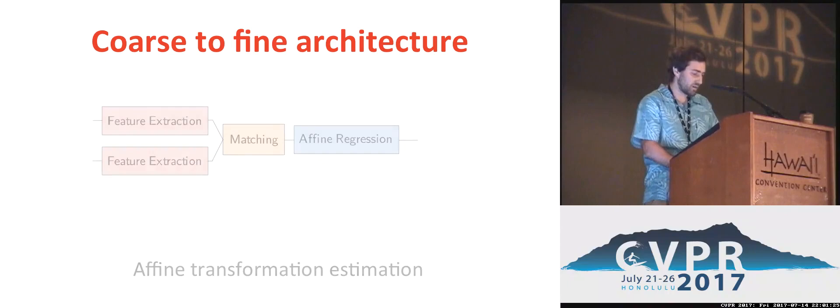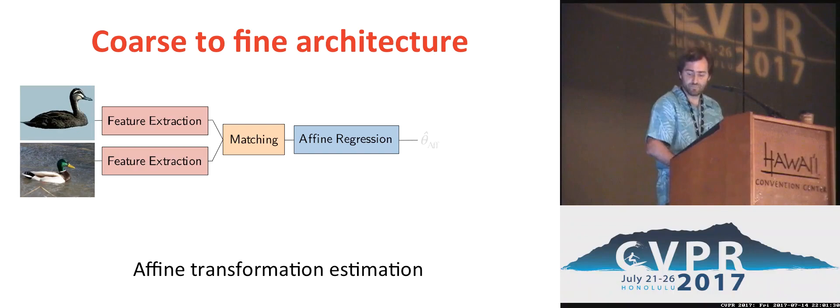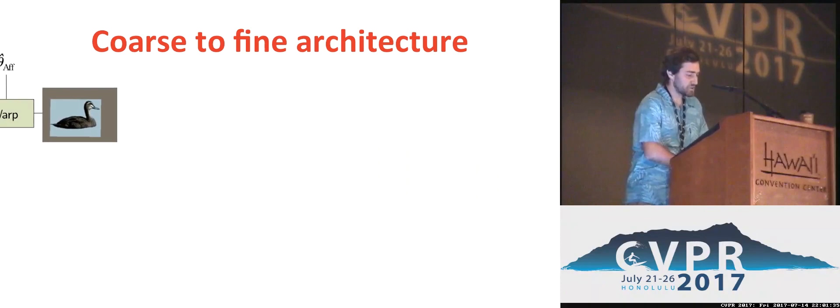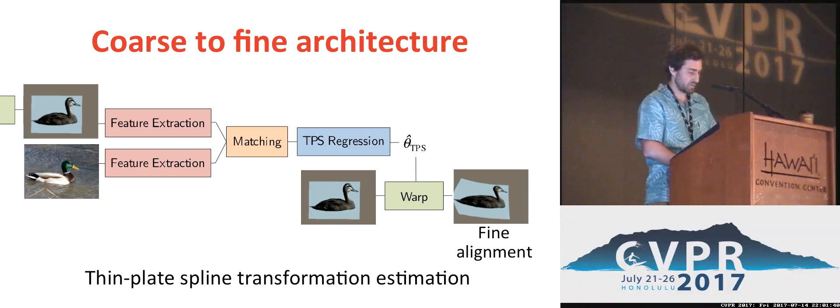We can apply this same approach in a coarse-to-fine manner, starting with estimating an affine transformation to obtain a coarse alignment, and then repeating the same procedure to estimate a thin plate spline transformation to produce a fine alignment. The final transformation is then the composition of the coarse and fine transformations.